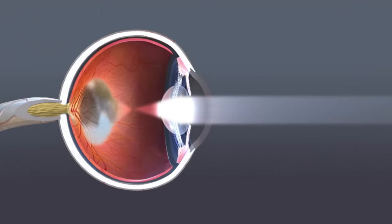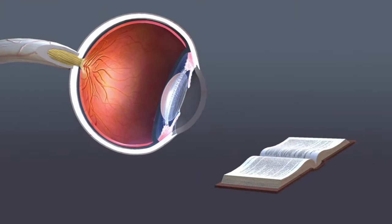Besides focusing light on the retina, the lens also adjusts the eye's focus, letting us see things clearly both up close and far away.